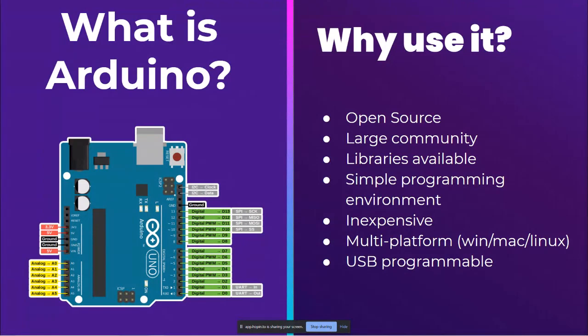Being open source makes it so that people interested in it have access to those sources and can develop as they would like. There's also a large community behind it, which means there are a lot of libraries accessible for the Arduino. For example, there are many libraries that allow you to use serial communication, so if you want to communicate with other microcontrollers or with a different language like Python, you're able to do that. It's also a really simple programming environment — Arduino uses its own language but it's based off of C and C++.